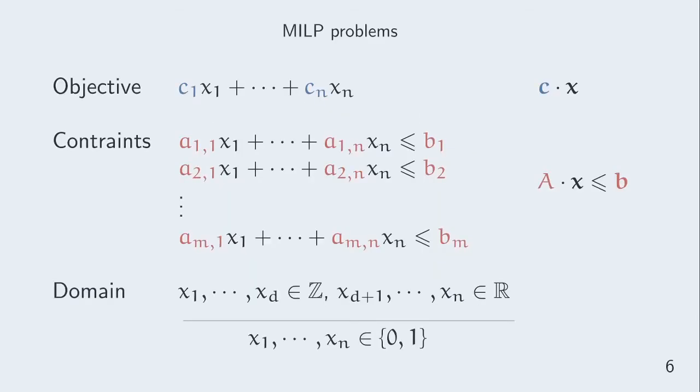First, what is a MILP problem? It is the problem of optimizing an affine linear function on variables x, the objective, under affine linear constraints and domain constraints, which means the variables can be restricted to integer values or even binary values. In our context, variables are often entirely binary.